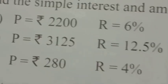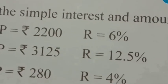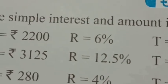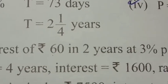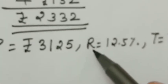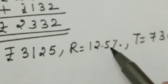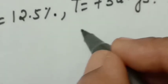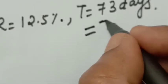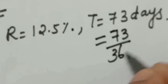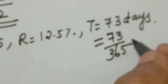Third problem we will discuss. Third problem: Principal equals Rs.3125, Rate equals 12.5%, and Time equals 73 days. Since the rate is per annum, the time should be in years. So you have to change days to years. One year has 365 days, so you have to divide by 365. Then it will be converted to years.